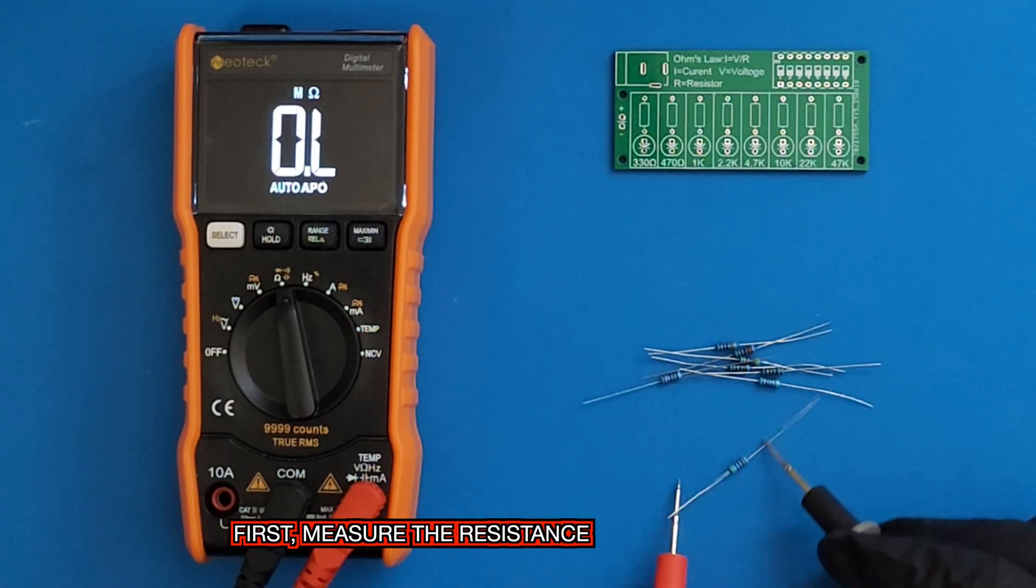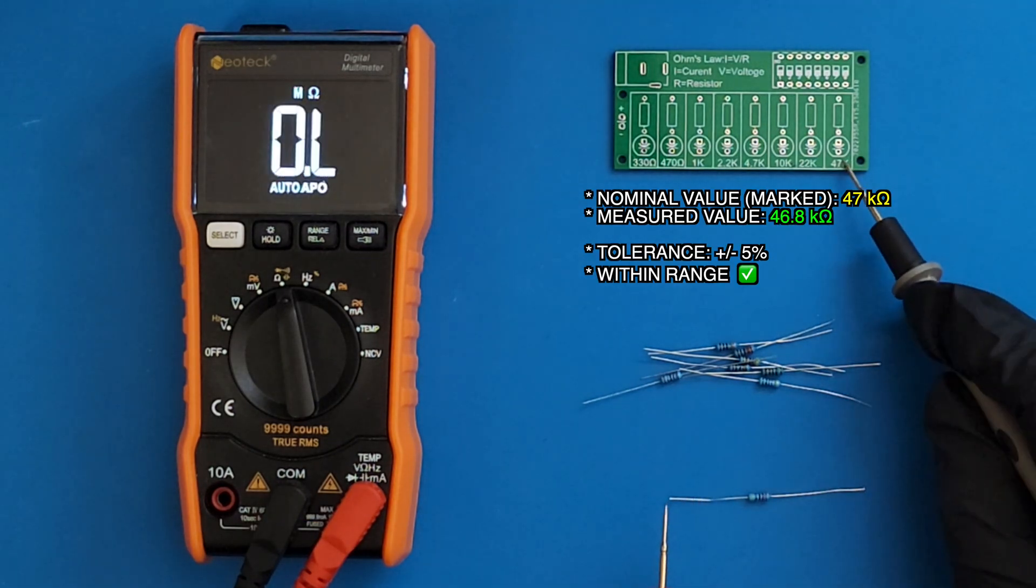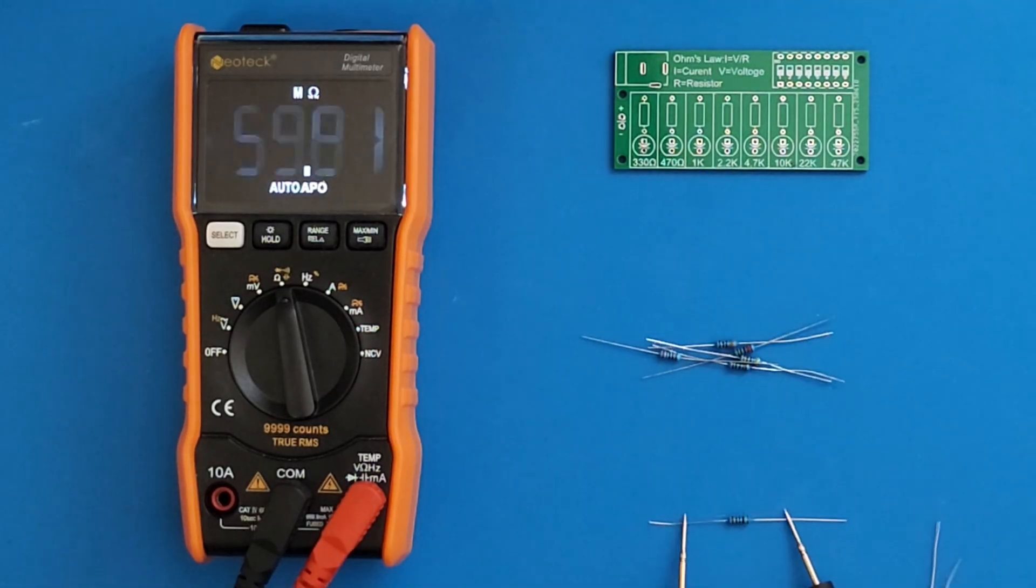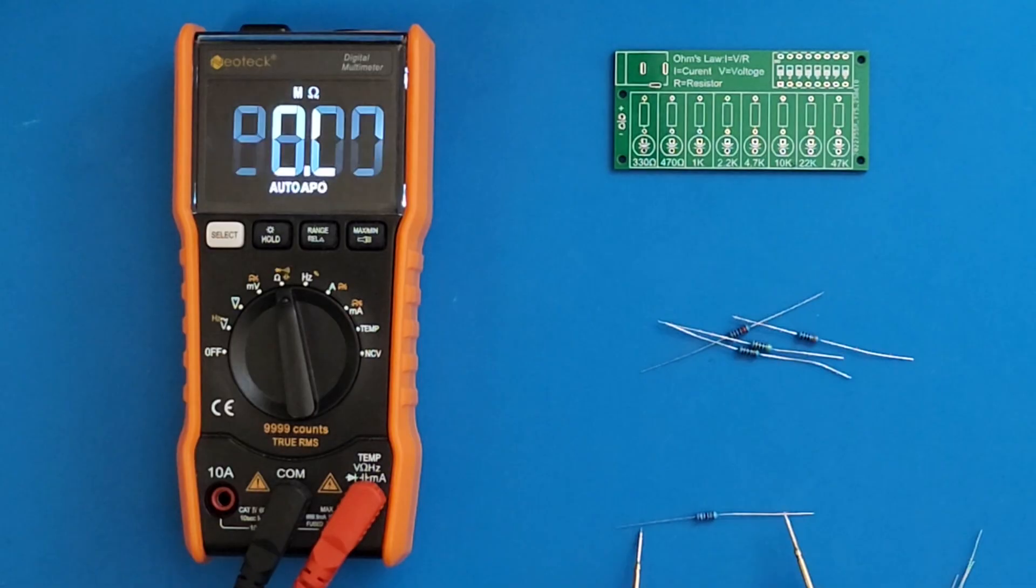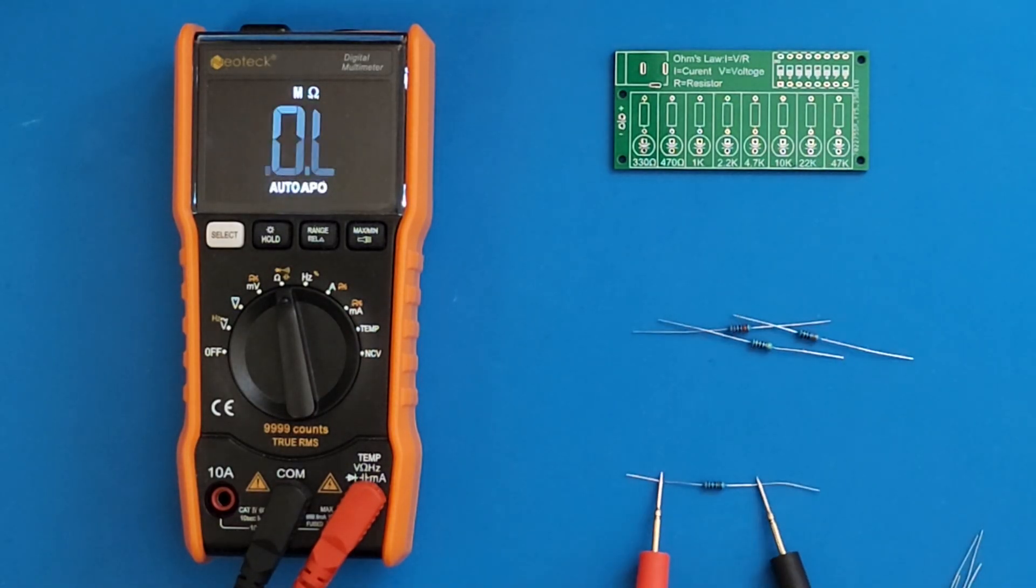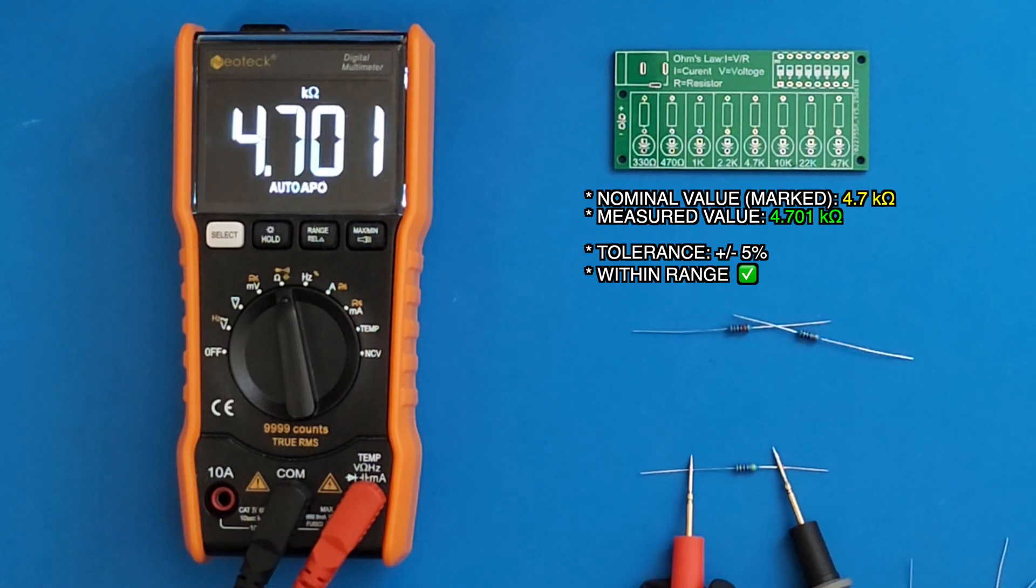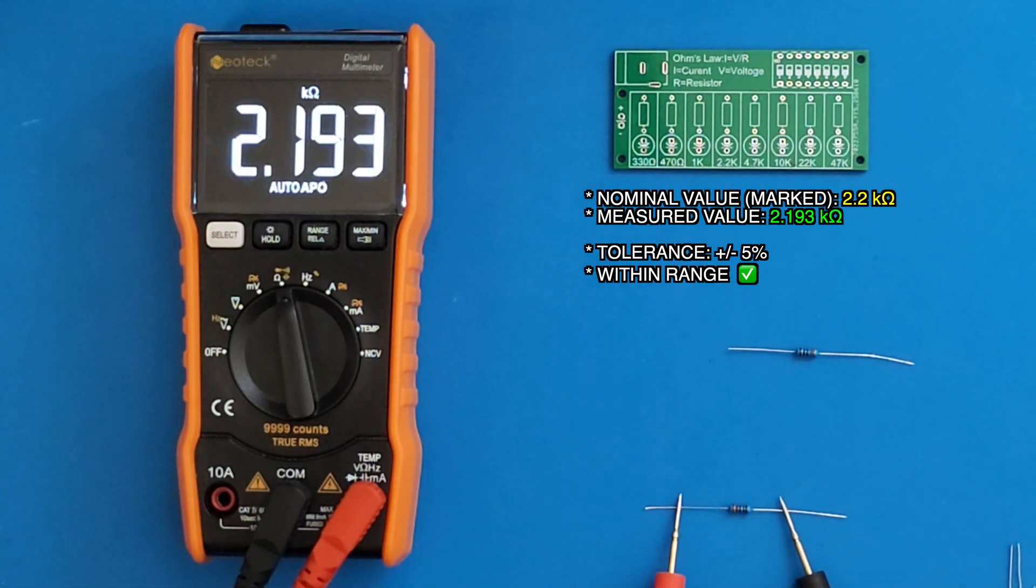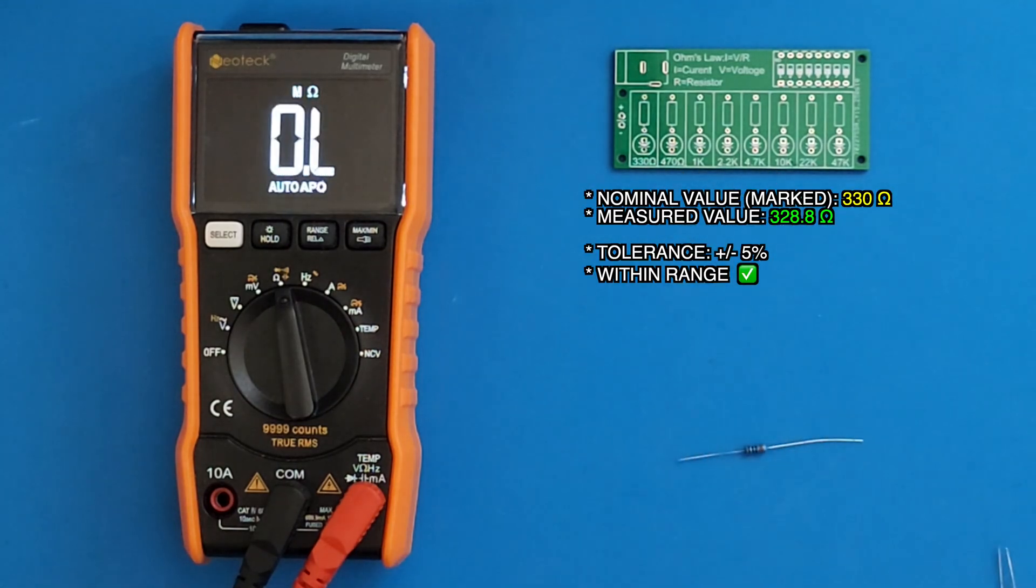First, measure the resistance of the resistors: 47 kiloohms or 70 ohms, 1 kiloohm, 22 kiloohms, 10 kiloohms, 4.7 kiloohms, 2.2 kiloohms, and 330 ohms.